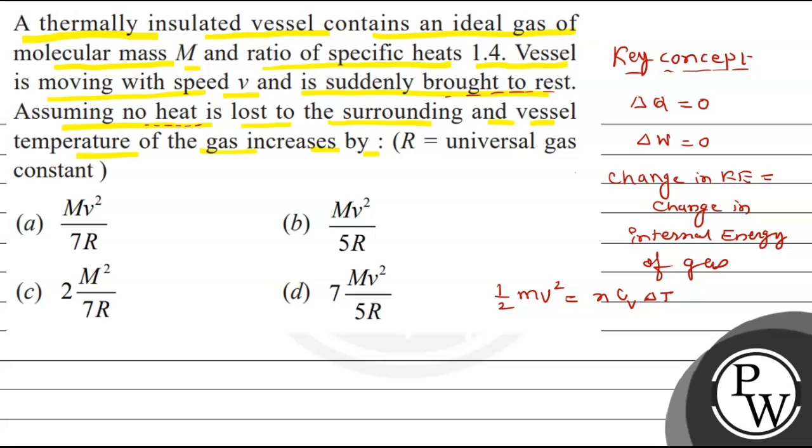Since we know that N equals M by capital M and in terms of universal gas constant, C V (specific heat at constant volume) equals R upon gamma minus 1. Substituting these values, half M V square equals M upon capital M, R upon gamma minus 1, and del T. The M terms cancel.